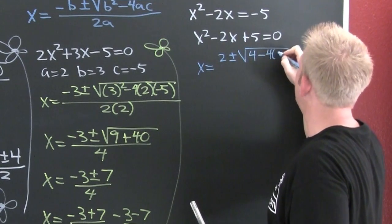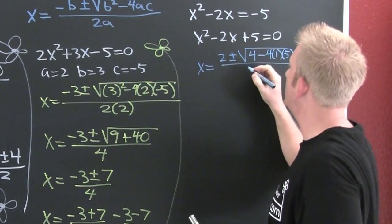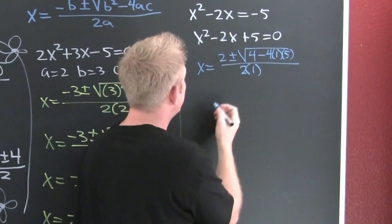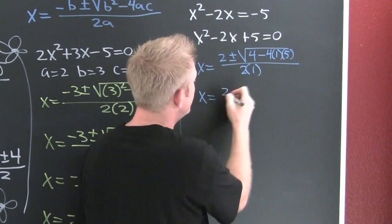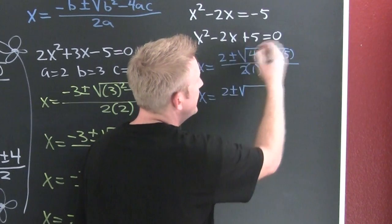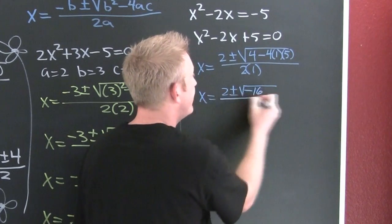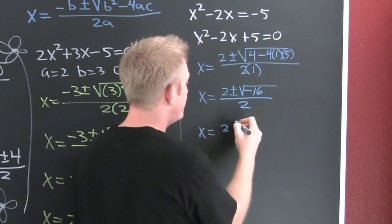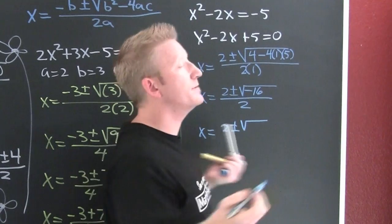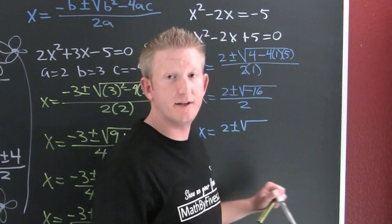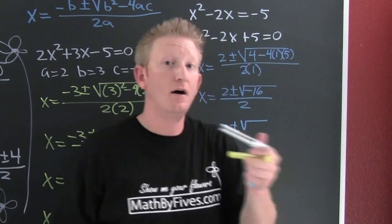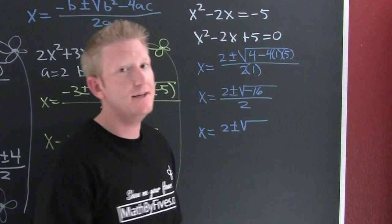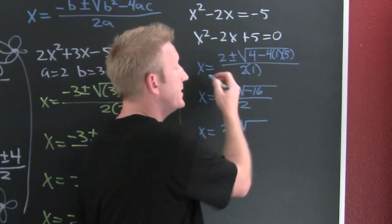So then x equals minus b plus or minus square root of b squared minus 4ac all over 2a. I'm cleaning that up: x equals 2 plus or minus the square root of 4 minus 20, which is minus 16, divided by 2. So then this is x equals 2 plus or minus the square root of minus 16 over 2. Now it depends on which class you're in. In a class previous to intermediate algebra, this is not real and you would leave it like that. But here we're going to keep on keeping on.